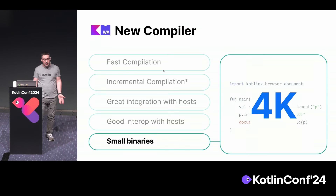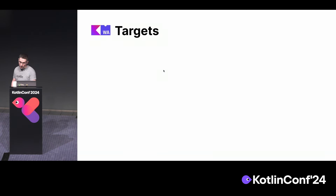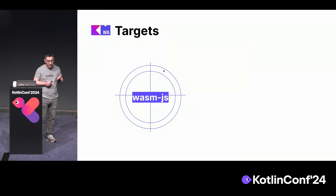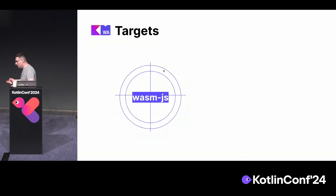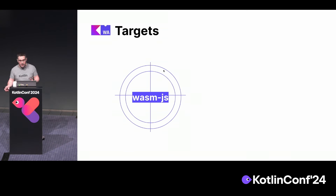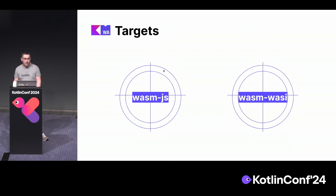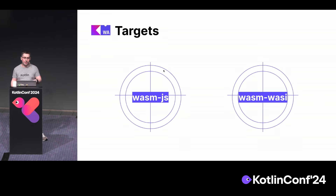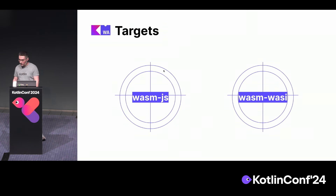We want good integration with hosts — for example, to avoid leaks for cross-module links — and convenient, fast interop with hosts. We provide out-of-box declarations for many browser APIs so you can easily access browser APIs and work with the DOM API. We want small binaries: four kilobytes is the size of that example. For WebAssembly we introduced two new Kotlin targets: Wasm/JS for environments with JavaScript (mainly browser use cases) and Wasm/WASI for outside-of-browser use cases without JavaScript.